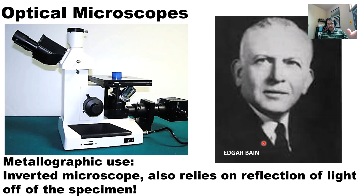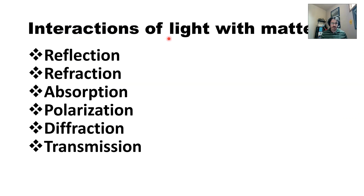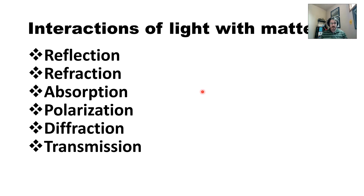We've talked about transmission and reflection, so it would behoove us to talk about interactions of light with matter. Reflection, refraction, absorption, polarization, diffraction, and transmission are the main interactions of light with matter. Let's talk just a little bit about each one of these.